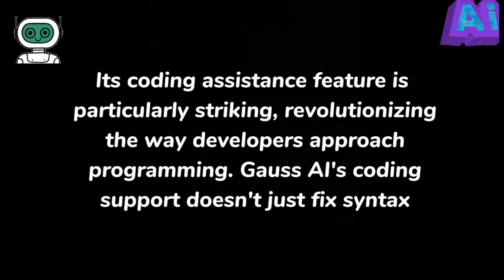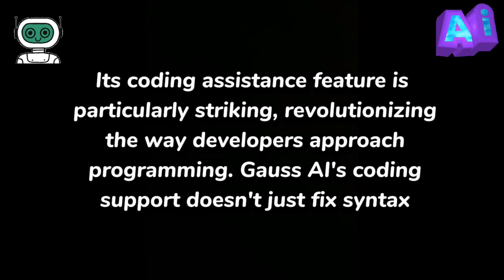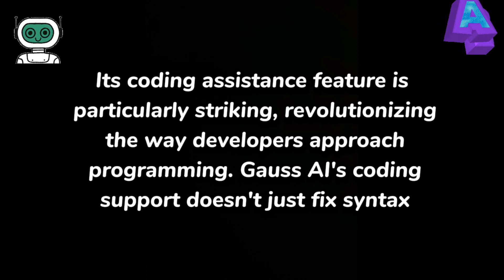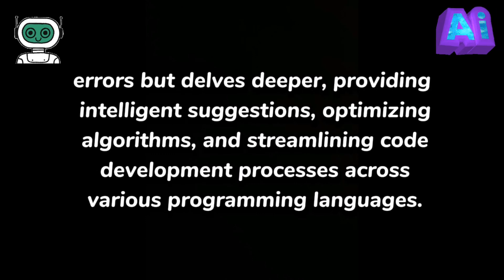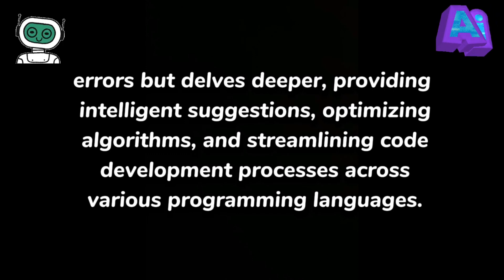Its coding assistance feature is particularly striking, revolutionising the way developers approach programming. Gauss AI's coding support doesn't just fix syntax errors but delves deeper, providing intelligent suggestions, optimising algorithms and streamlining code development processes across various programming languages.